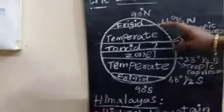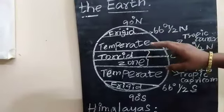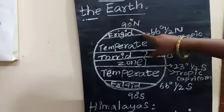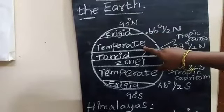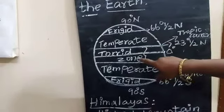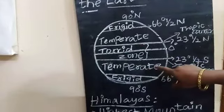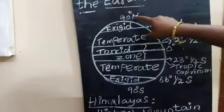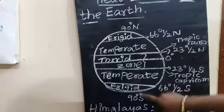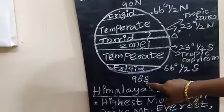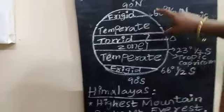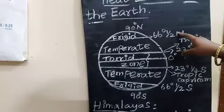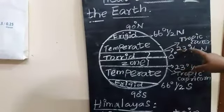On the surface of the earth we can see different zones. The first one is called the frigid zone, next is the temperate zone, then the torrid zone, then another temperate zone, and finally the frigid zone again. The top indicates the north side at 90 degrees, and the bottom indicates the south direction.